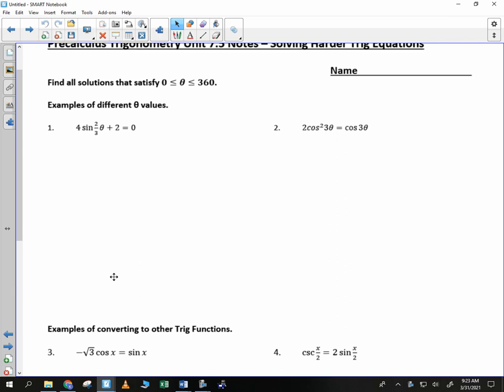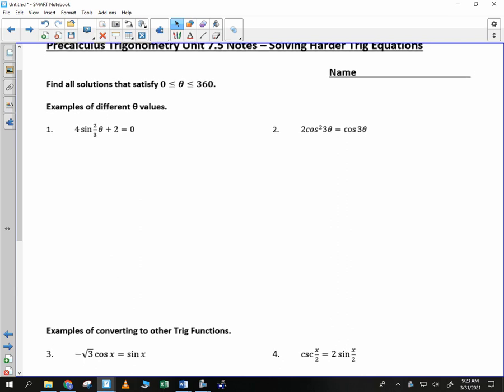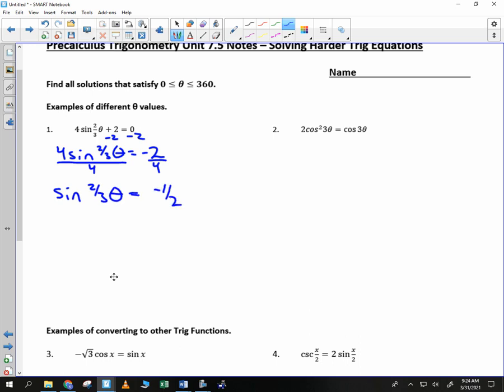And we get four sine of two-thirds theta is equal to negative dos, which is Spanish for two. Then we divide by four and get sine of two-thirds theta equals negative one-half. Don't freak out about this, but we're going to pause for a minute so you can see and understand what's going on.